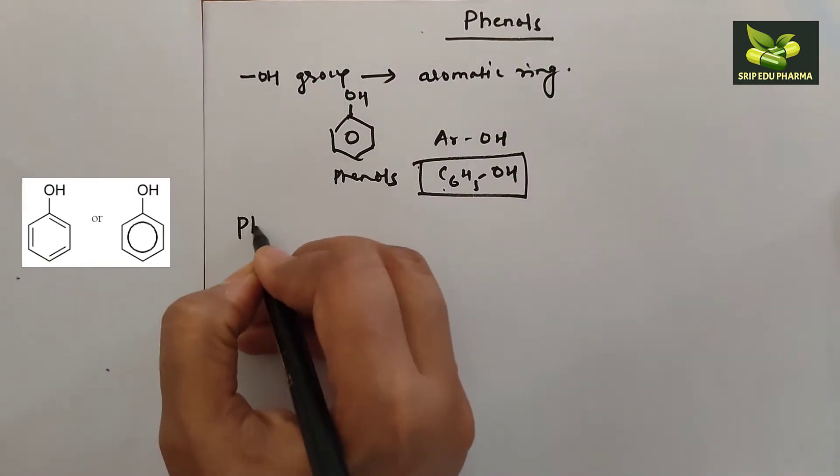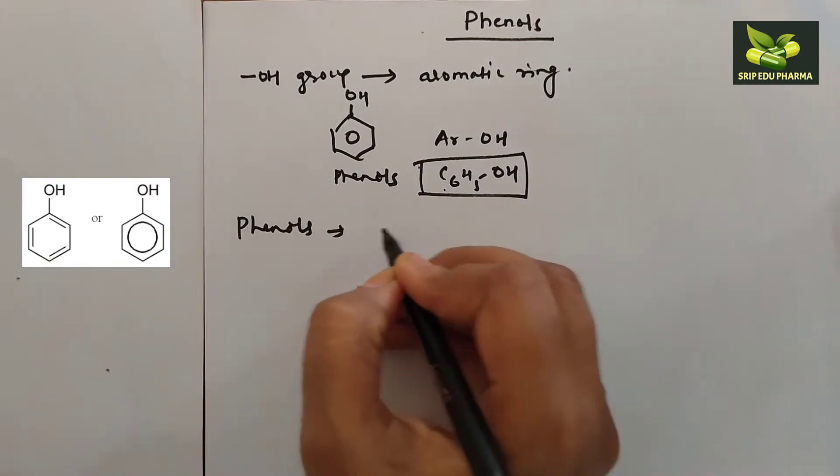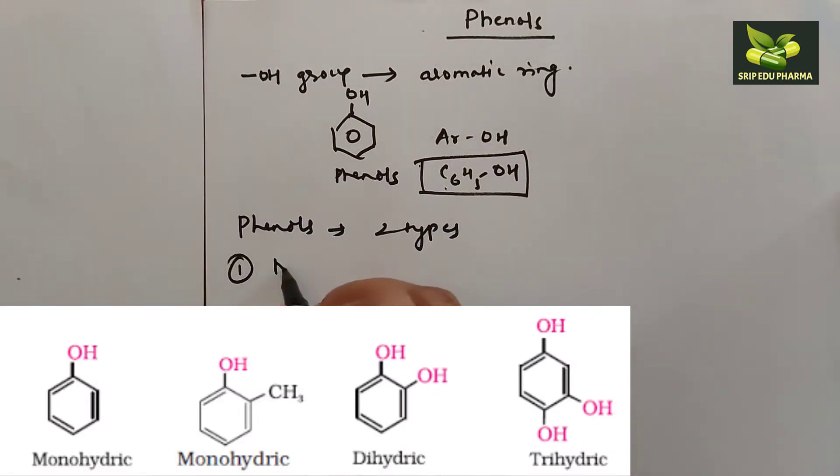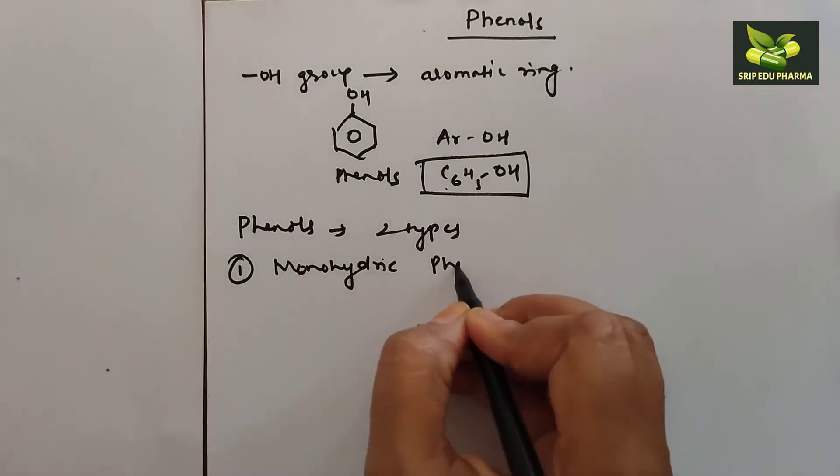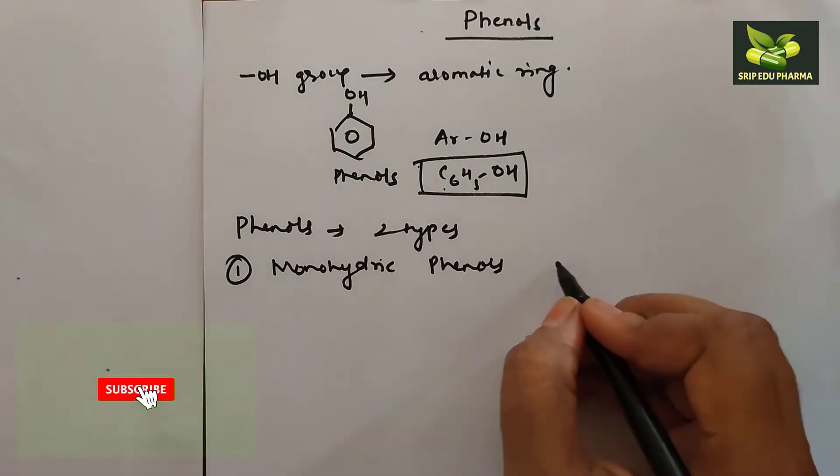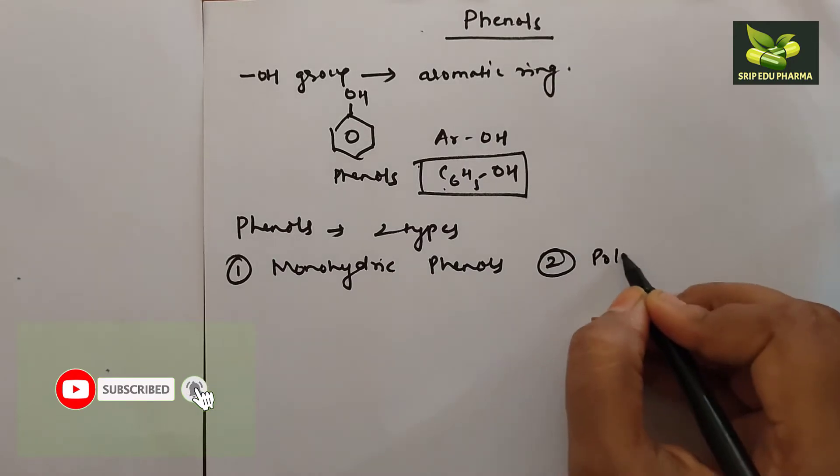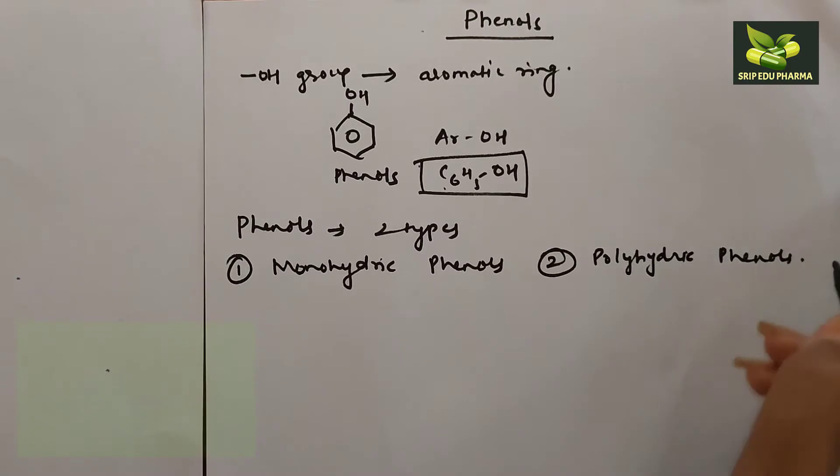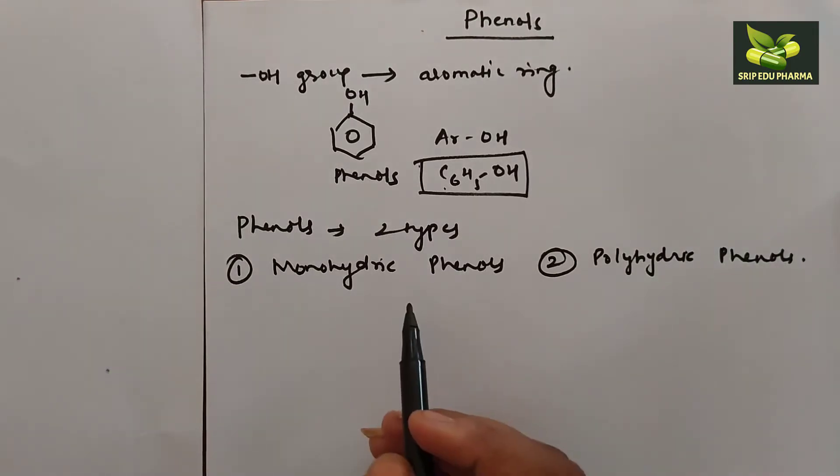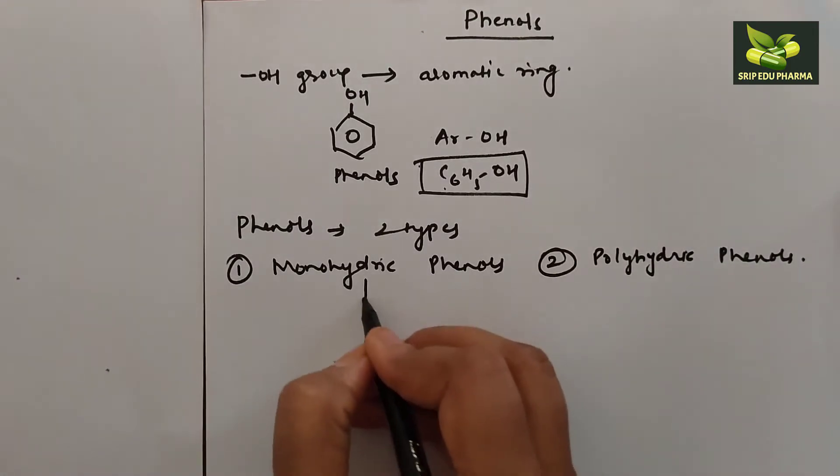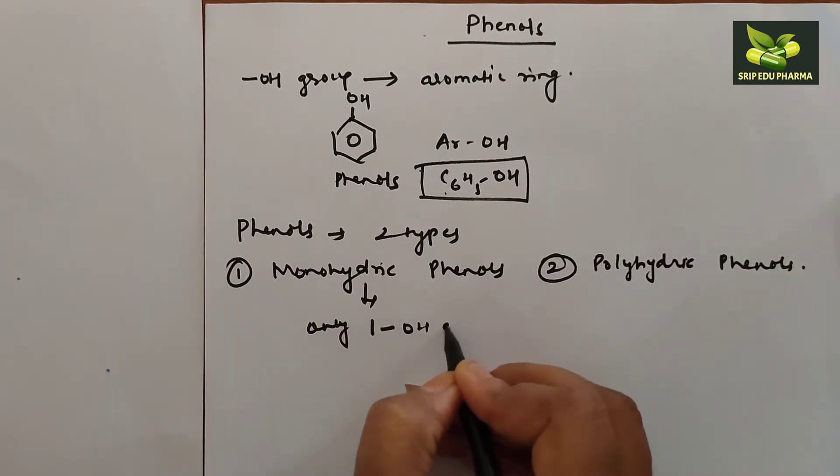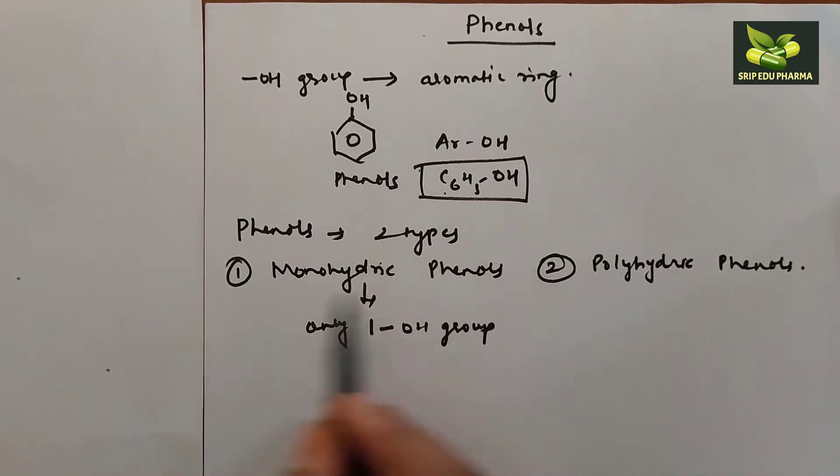Basically, phenols are classified into two types. First is monohydric phenols and another is polyhydric phenols. What are monohydric phenols? Those which contain only one hydroxyl group are called monohydric phenols.